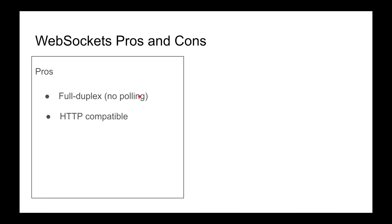It's HTTP compatible because of the upgrade header. Without that, proxies will fail and things can go bad — nobody would know this is actually a WebSocket. If you just started creating a raw socket and sending binary information, firewalls would start blocking it because they don't recognize it. But because it starts with a legitimate HTTP request and then upgrades to a WebSocket, it passes through all the internet infrastructure and should work with anything.